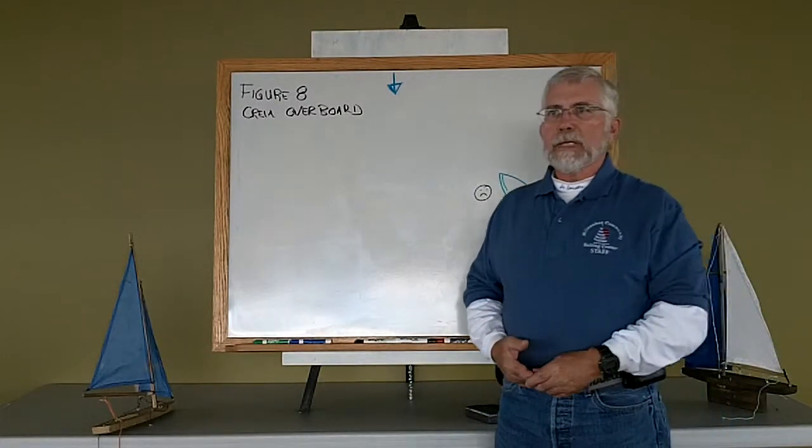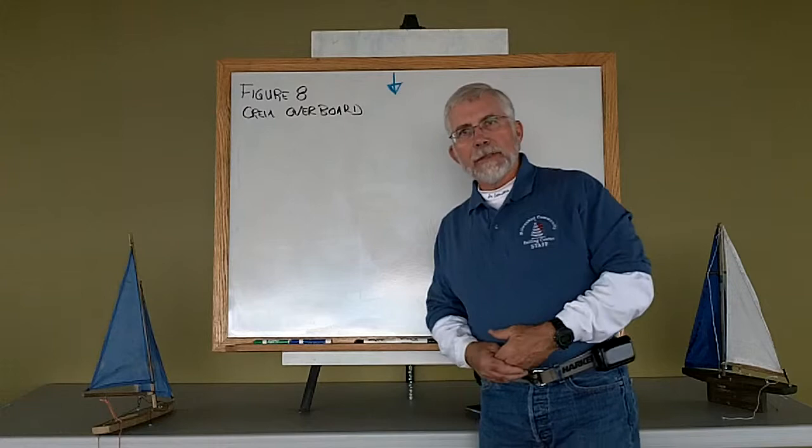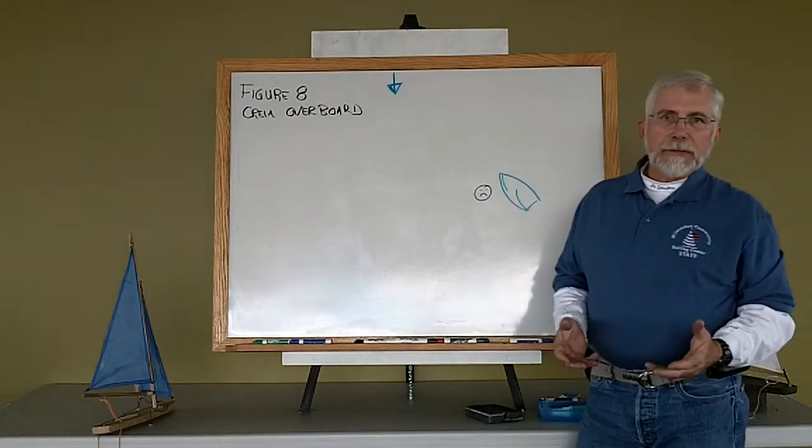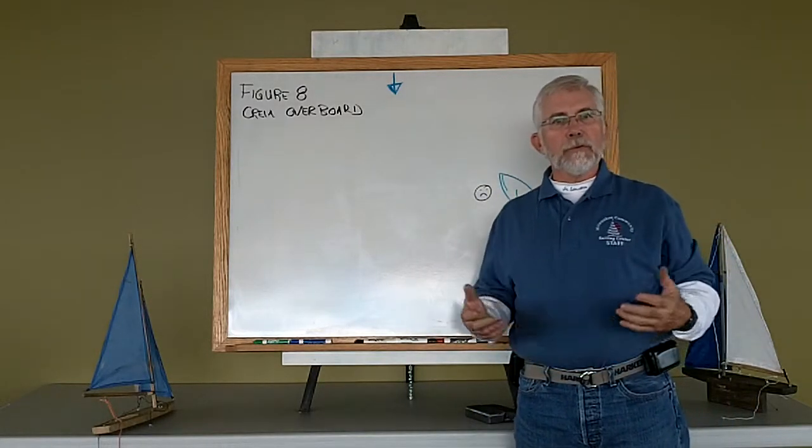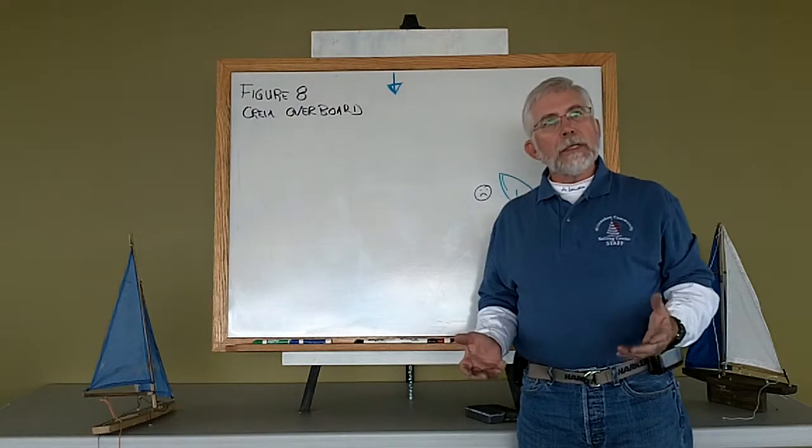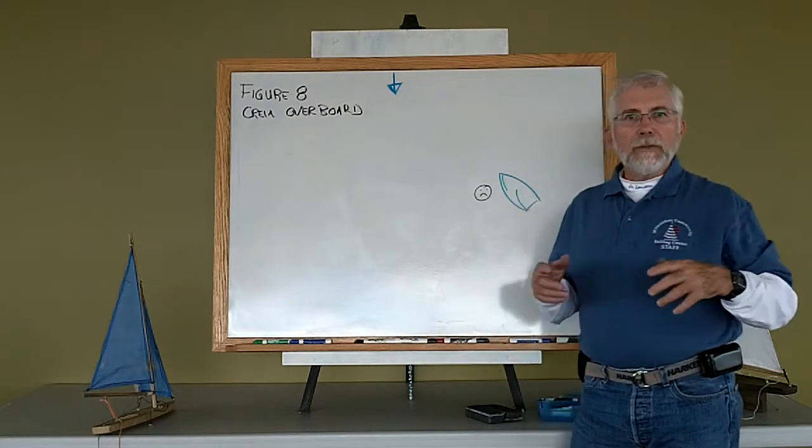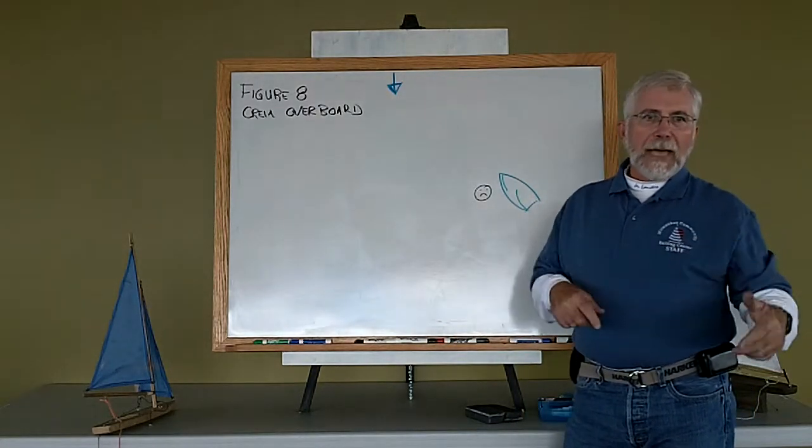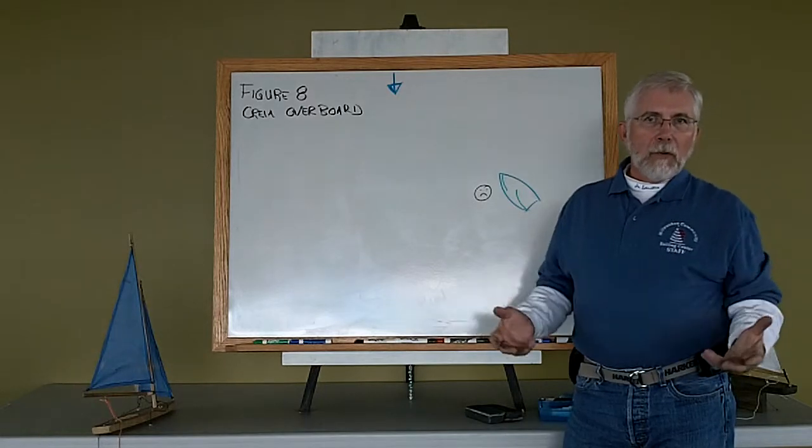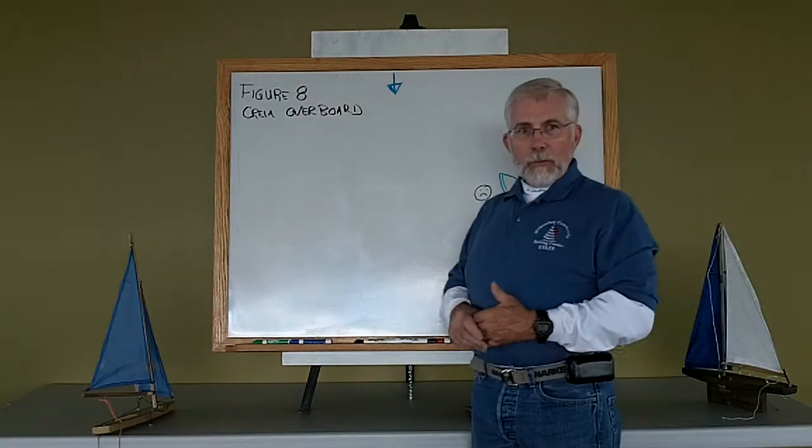One of the things we need to know when we go sailing is how to deal with emergencies. Unfortunately, one of those emergencies could be a situation where you have a crew that actually falls in the water. This is about how we maneuver the boat to get back to that crew in what we call a figure eight crew overboard.